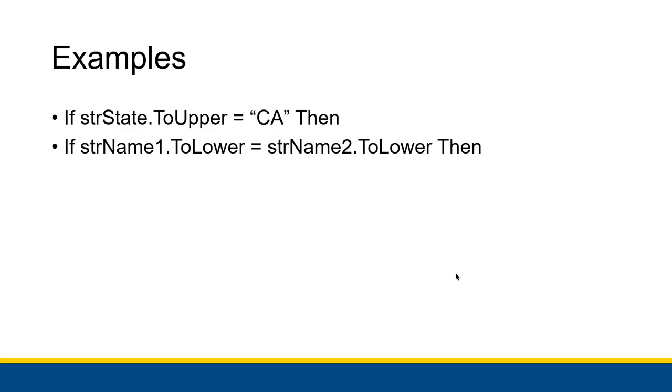So here's some examples. I have a couple of if statements with the conditions inside of them. The first thing we can do, if we imagine strState is something that we got from the user, we can convert it to uppercase by invoking the .ToUpper method and test it against 'CA'. Which will work if strState contains lowercase CA, or lowercase C uppercase A, or uppercase C lowercase A. All of those would be converted to all uppercase.